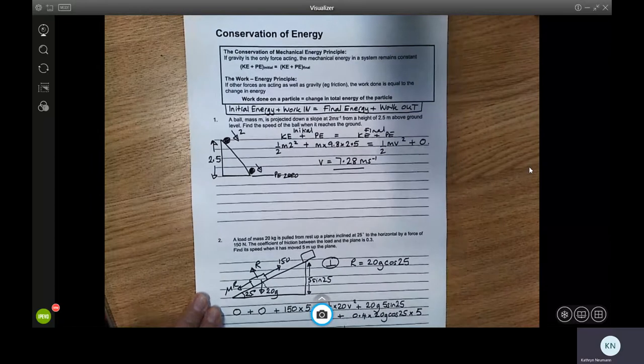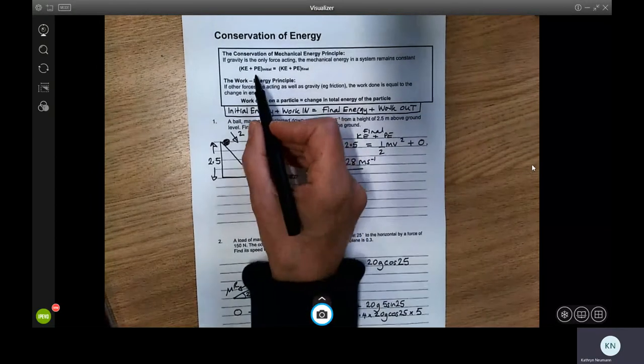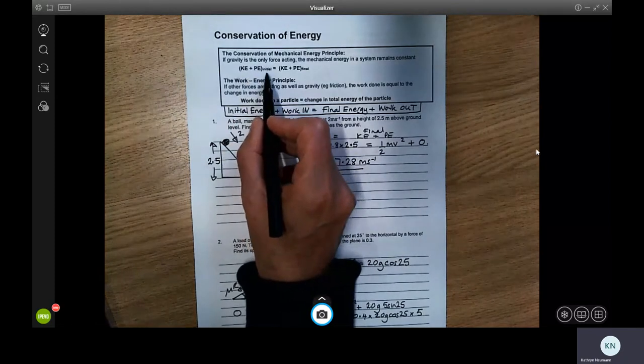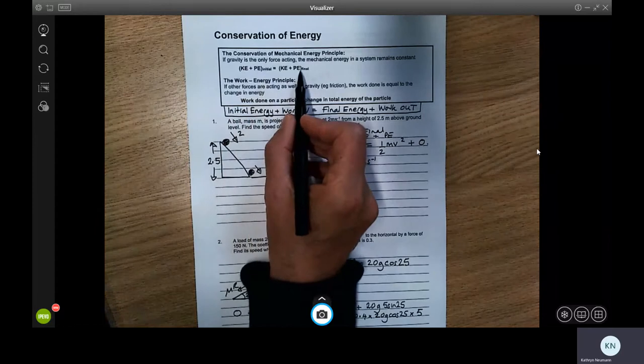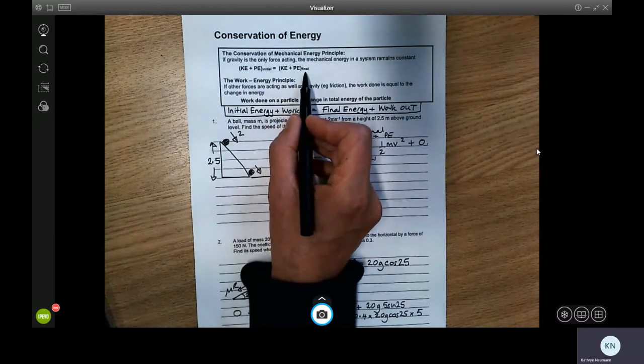So the conservation of mechanical energy principle says that if there's only gravity acting, then the kinetic energy and potential energy at the beginning of the system will be equal to the kinetic energy and potential energy at the end of the system.